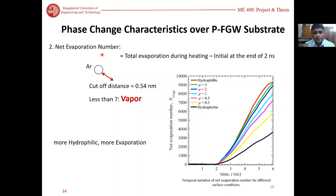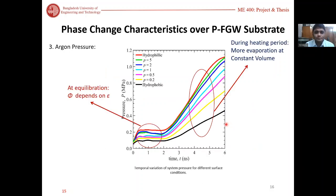For the evaporation number we defined a cutoff distance of 0.54 nanometer in which we find less than seven atoms around, we call it vapor, otherwise it's liquid. Net evaporation number was found from the difference of total evaporation number and initial evaporation number. As the value of p is high, the net evaporation number gets high. From the argon pressure we see that as the p value is high, we get high pressure. At equilibrium, pressure depends on the potential function which is directly proportional to p.